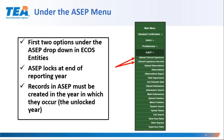As with other records under the ASEP menu, the clinical experience records must be created in the year in which they occur, which is the current unlocked year. In other words, you will not be able to add a record for a previous year or a future year, which is existing functionality for the ASEP menu options.